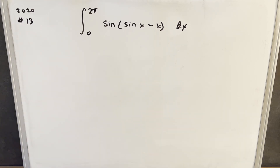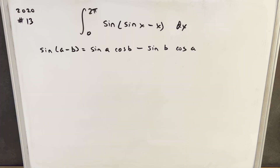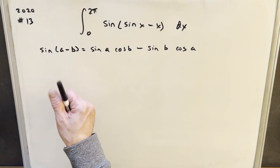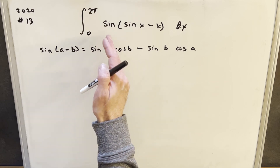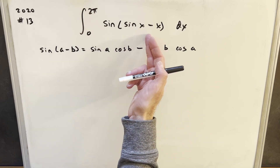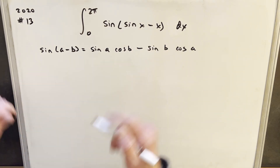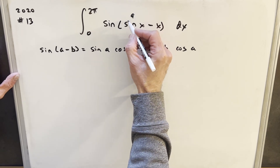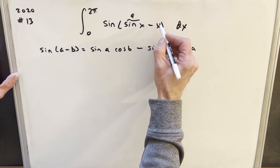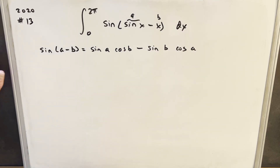I wasn't sure if maybe I should do a u-substitution first, or if maybe I should just do some trig stuff. I think what I'd like to do is put off the u-sub and do trig stuff first. What I want to do is use this angle difference formula for sine that we have here, noticing it's in exactly the right format — just considering that our a value will be sine x and our b value will be x, and we can just kind of pattern match.